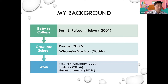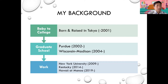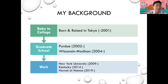I got my MA from Purdue and PhD from Wisconsin. Then I moved to New York City to start teaching as a language lecturer. After five years of teaching there, I moved to Kentucky and taught undergraduate courses. Last fall, I started teaching here at UH Manoa. The reason I'm telling my background is not because it's particularly interesting — it's quite probably boring for most people here — but rather because these events in my life are clearly reflected in the social networks I have formed and been part of over the years.